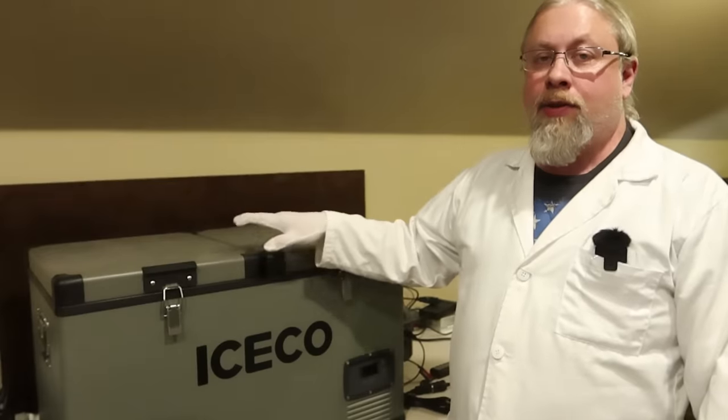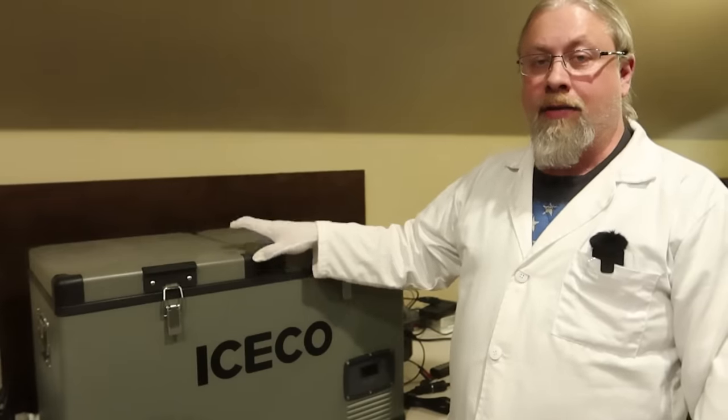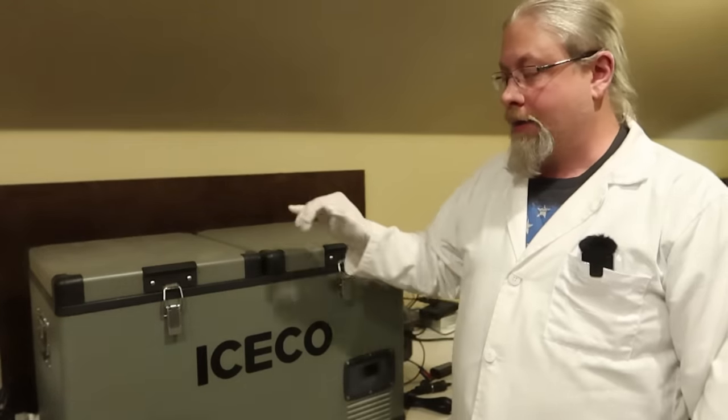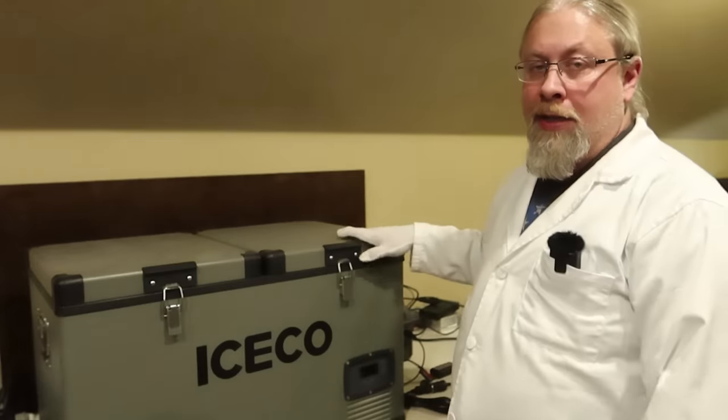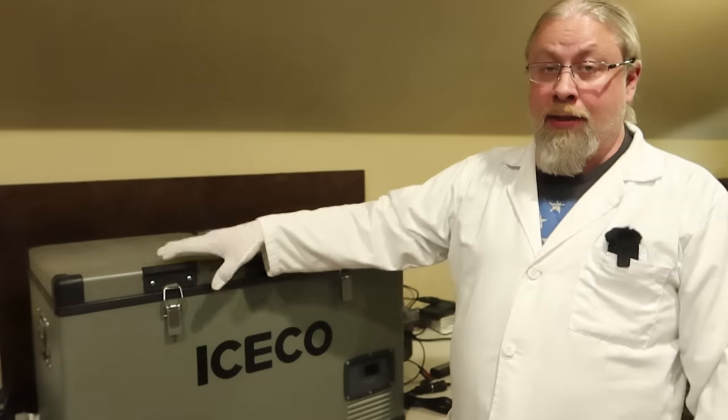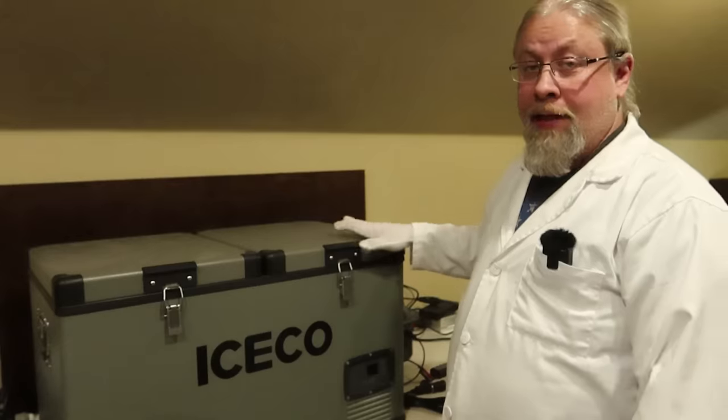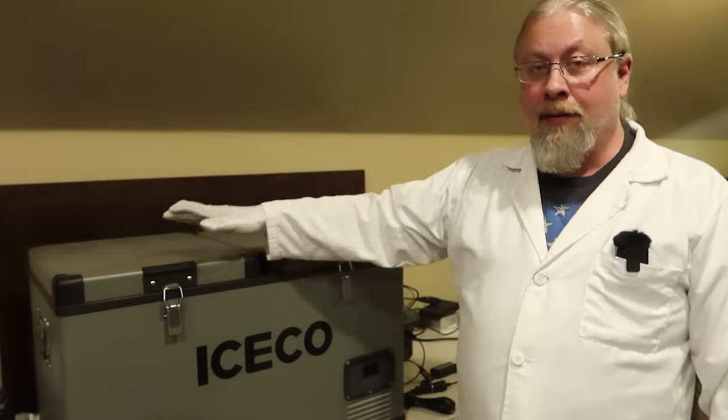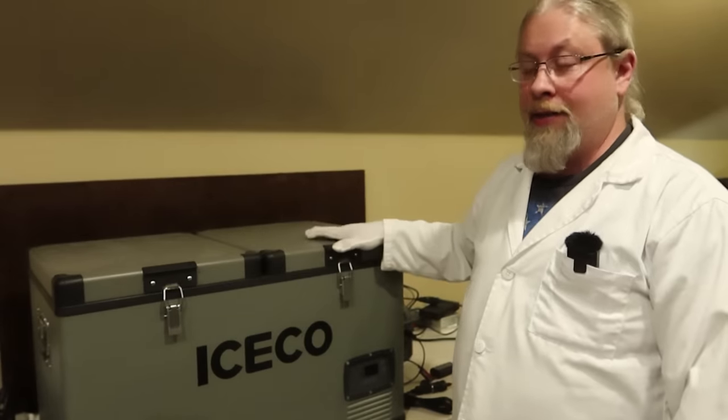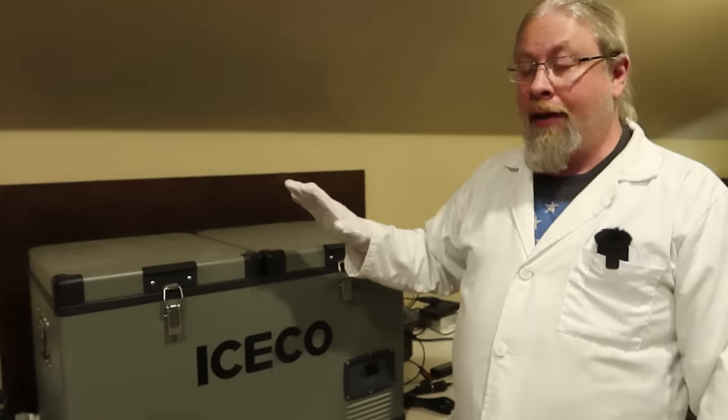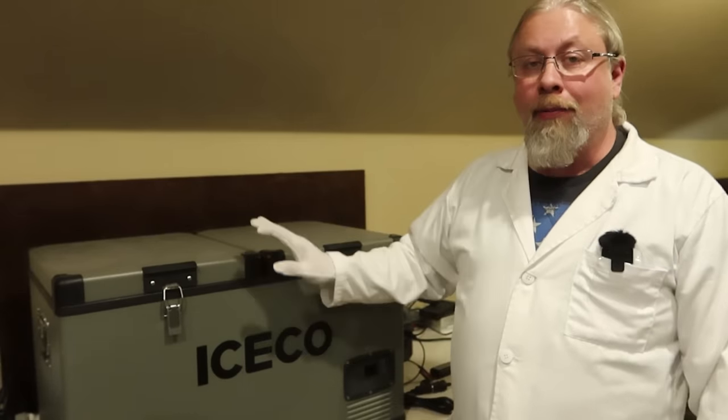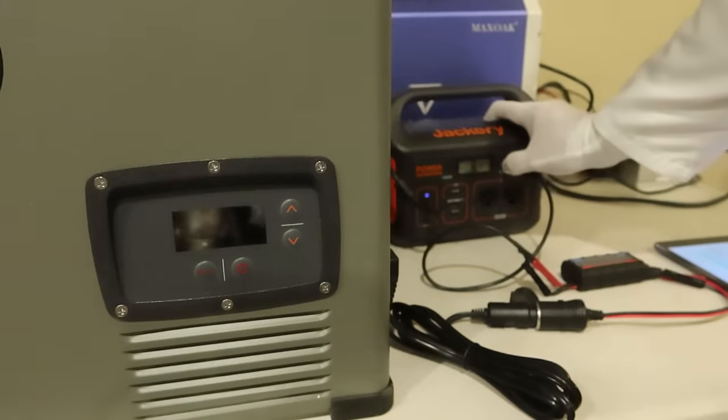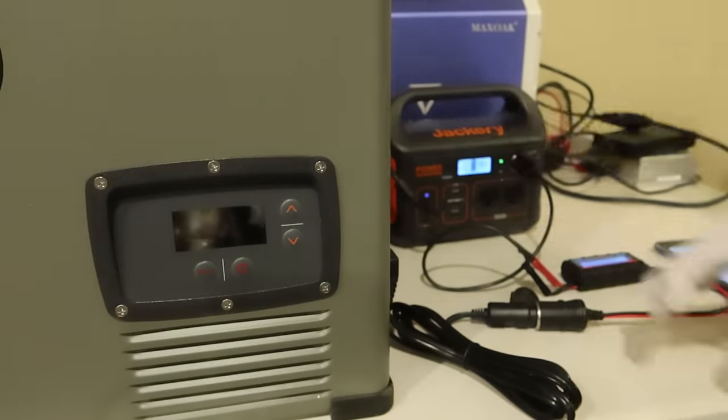We're going to go ahead and do the test that shows how long it takes to get down to operating temperature as well as how much power it's going to take. Since this is a dual zone refrigerator, that means one side's refrigerated, the other side's a freezer. I'm going to set the refrigerated side to 32 degrees Fahrenheit, I'm going to set the freezer side to zero degrees, and we're going to leave it that way, set on max mode, and we're going to determine how long does it take and how much power does it require.